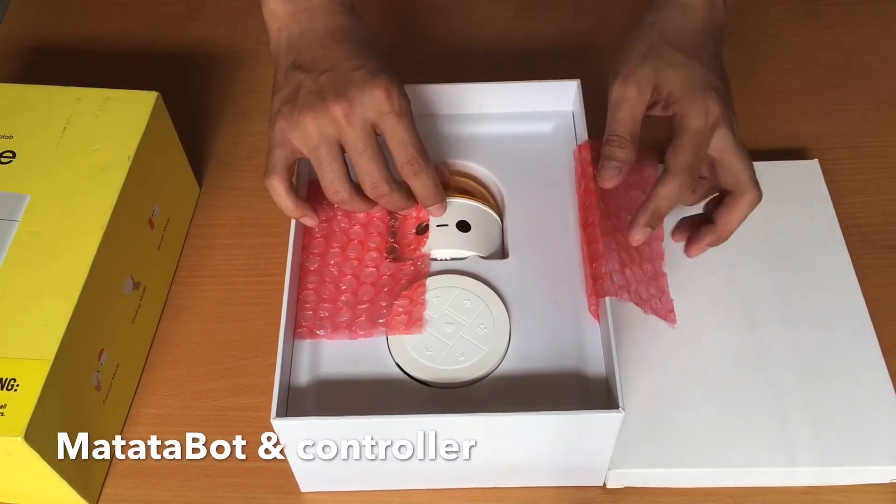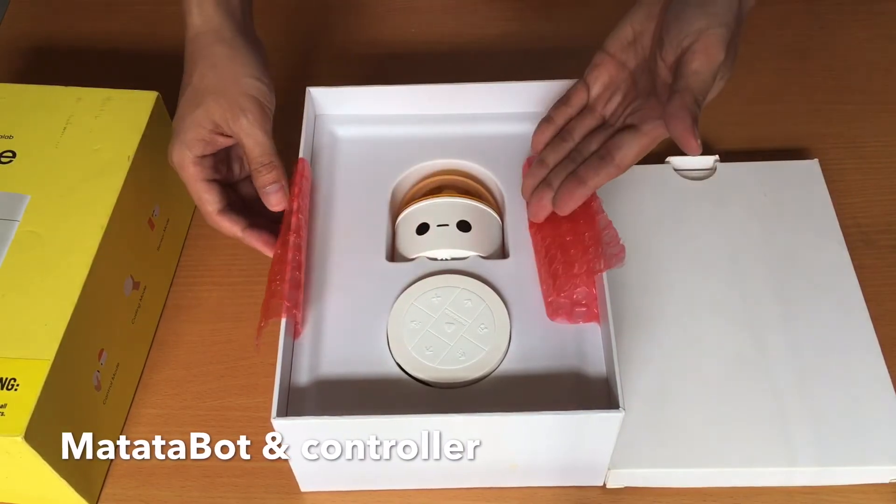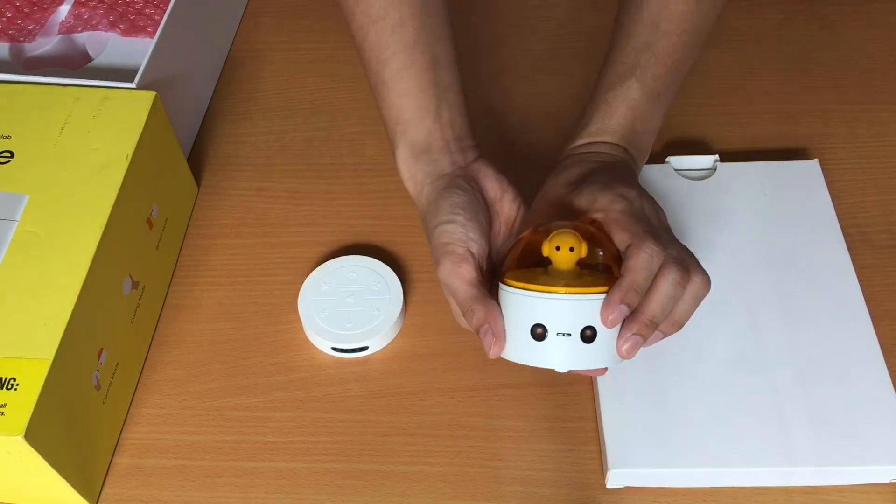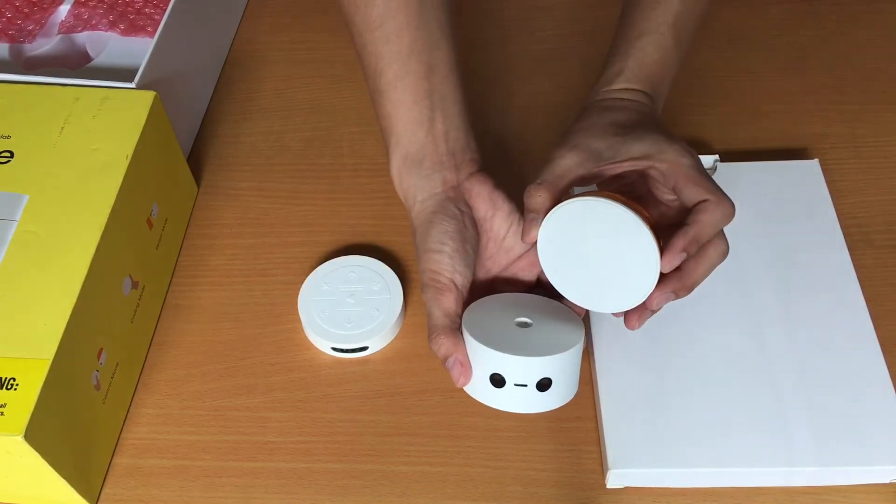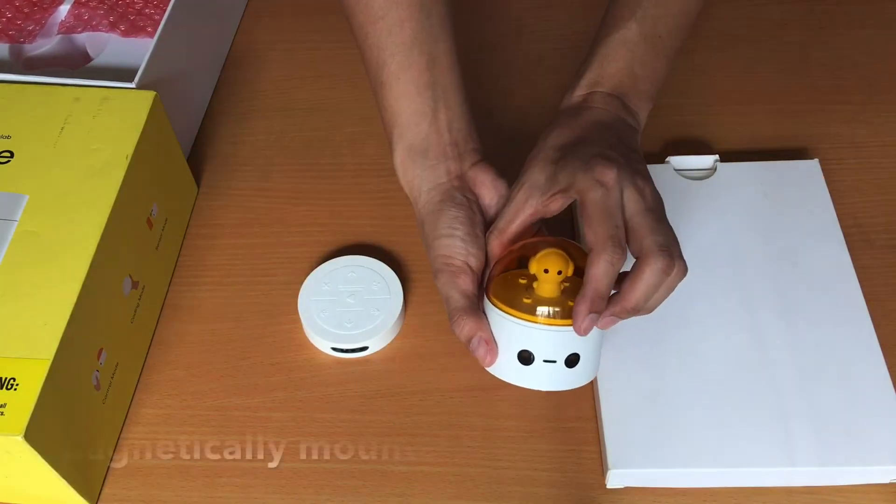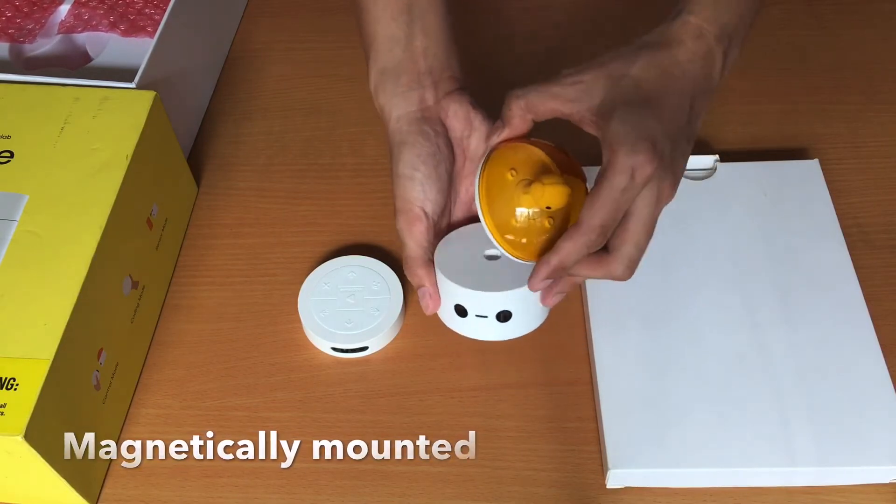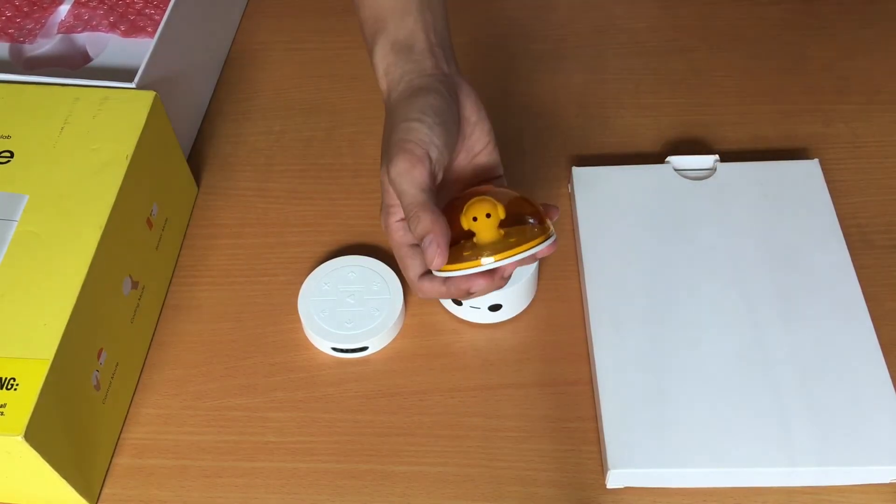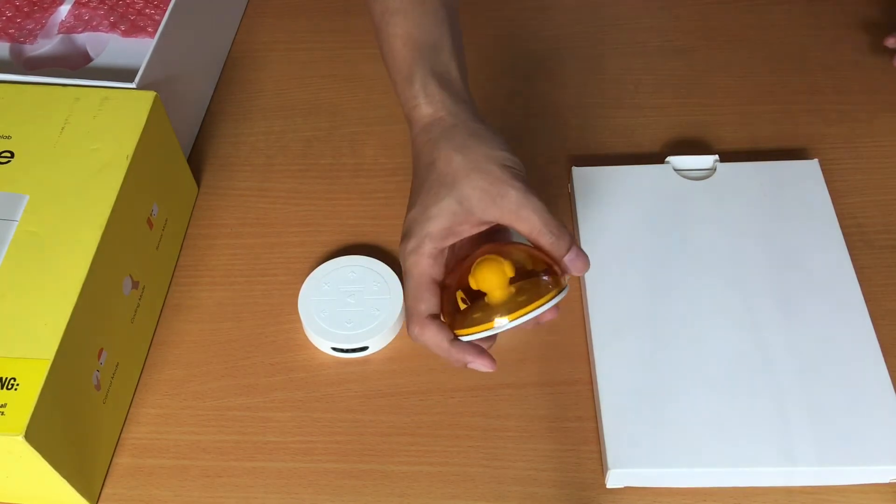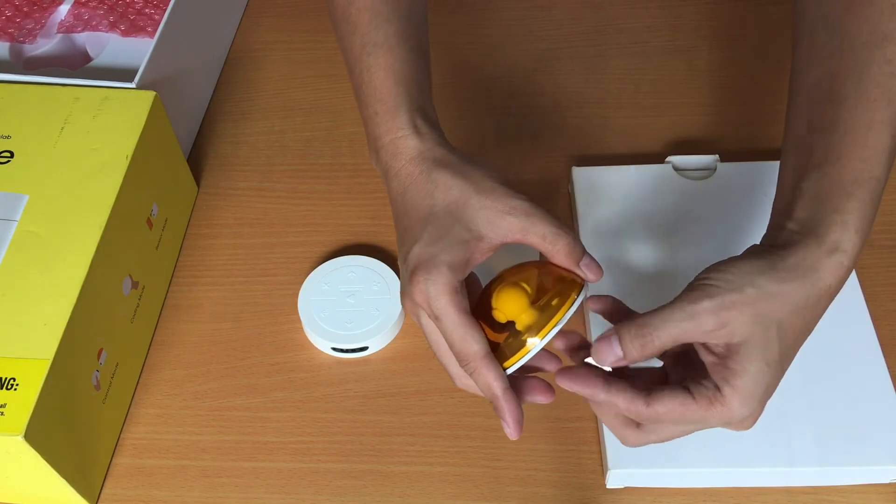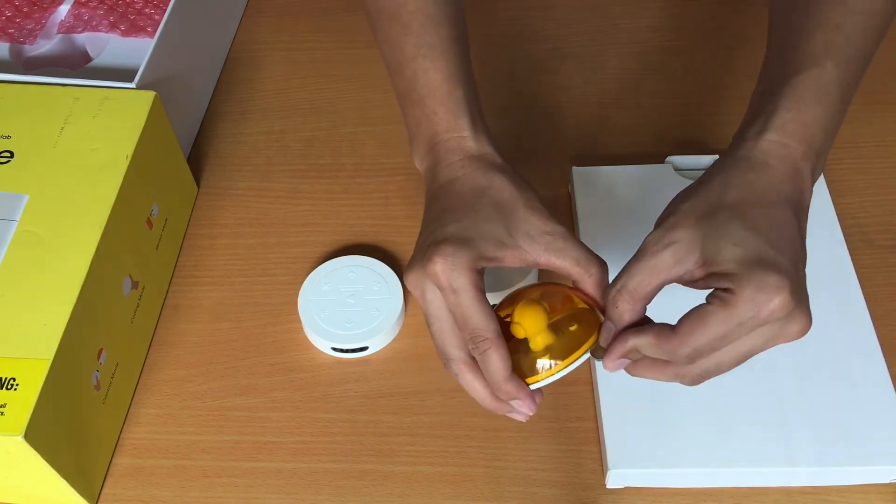So this is the Matatalabot and this is the controller. With the Matatalabot, it has a figurehead component which can be mounted magnetically onto the Matatalabot. And you can remove and replace the figure inside by using your nails here on the slot or with a coin. Like this.